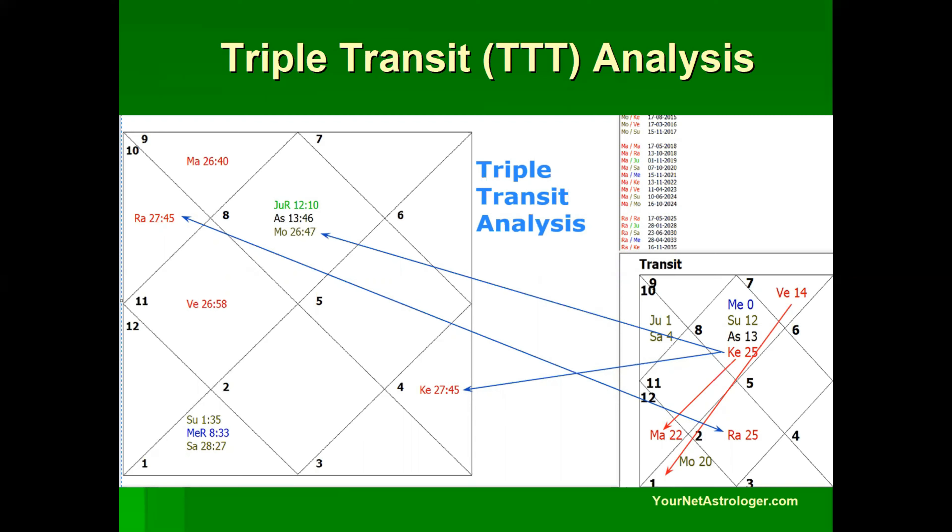So first we see the red arrows. Red arrows show the influences within the transit chart, so it is transit to transit analysis. Like here Ketu afflicts Mars and Venus is placed close to the most effective point. So Venus from the house of losses is afflicting the MEP of sixth house which is the house of conflicts.